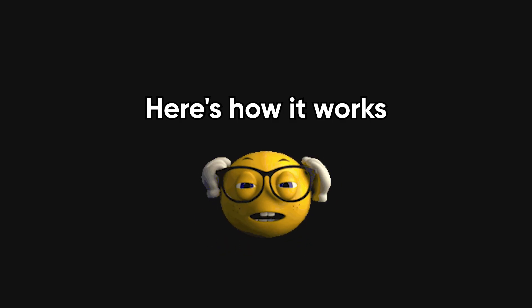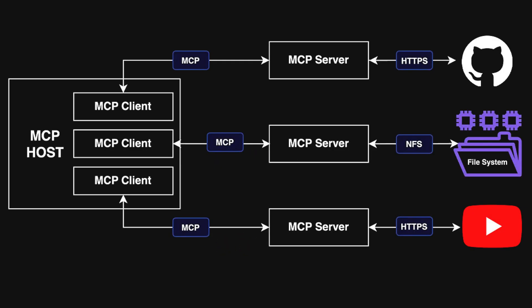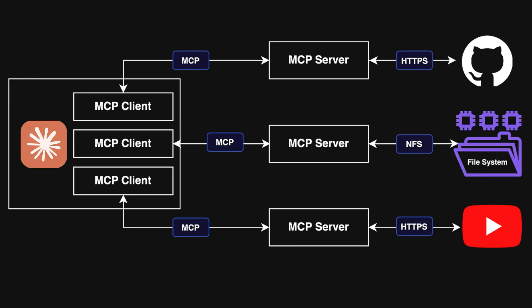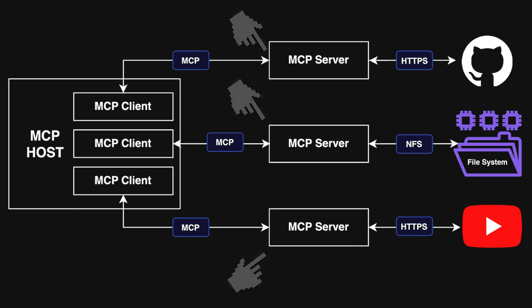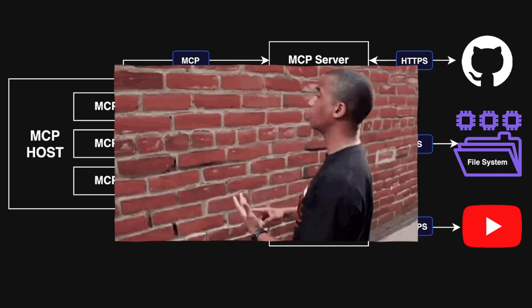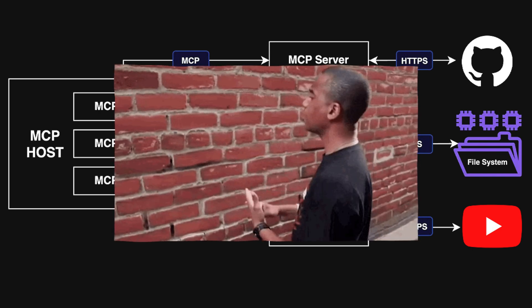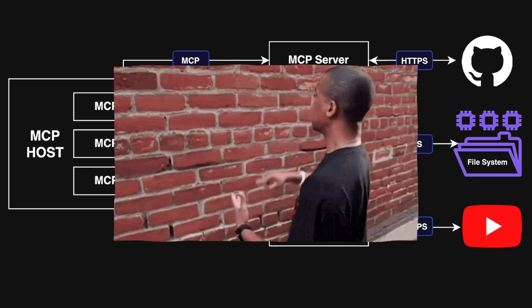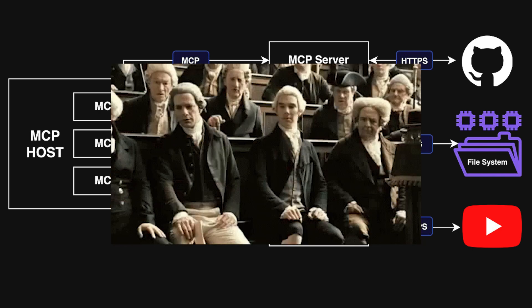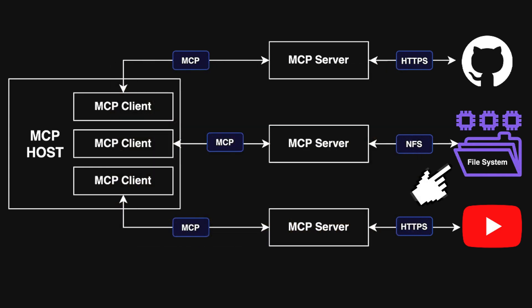Here's how it works. At the center, you have the host, which is your AI-powered app — maybe Claude Desktop, an IDE, or something like Cursor. That host connects to MCP servers, which are like translators for specific tools. A GitHub server knows how to list your pull requests. A file server can save a summary straight to your desktop.